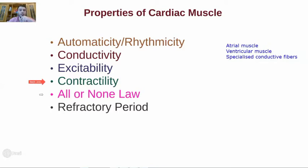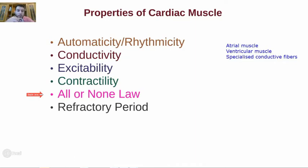The all-or-none law is a property specialized to cardiac muscle. If the stimulus is sub-threshold, the cardiac muscle will not contract. If the stimulus is adequate, the cardiac muscle will contract with maximum force. Either the cardiac muscle responds with full force of contraction, or it will not contract at all — that is the all-or-none law.